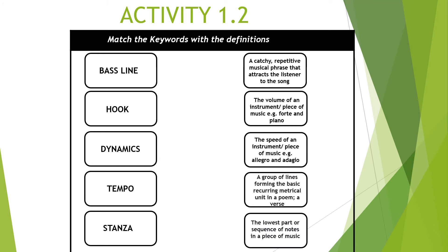Activity 1.2. I would like you to match the keywords with the definitions. The keywords are: bass line, hook, dynamics, tempo, and stanza. The definitions are: a catchy, repetitive musical phrase that attracts the listener to the song; the volume of an instrument or piece of music, for example forte and piano; the speed of an instrument or piece of music, for example allegro or adagio; a group of lines forming the basic recurring metrical units in a poem — a verse; or the lowest part or sequence of notes in a piece of music. Please pause the video now.